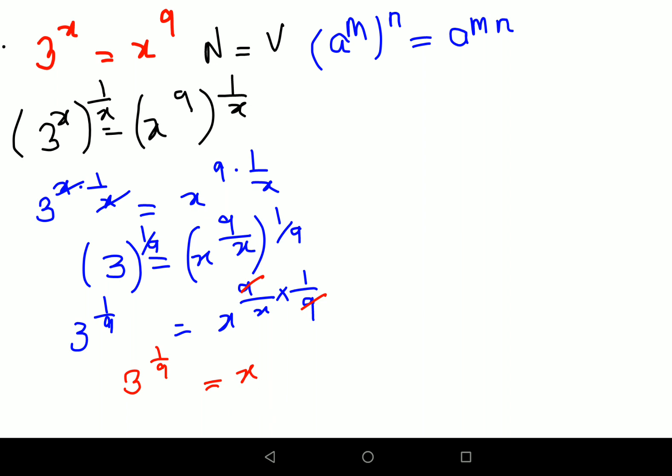Now see here, if you also had 1/3 here, then you could have directly said that the value of x is just 3. But since that is not the case, we still have to modify something. We have 3^(1/9) and here we have x^(1/x).